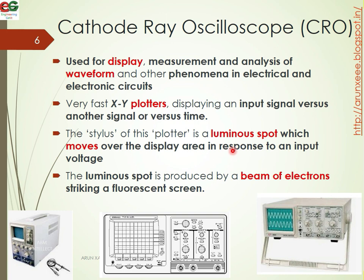The luminous spot is produced by a beam of electrons striking a fluorescent screen. If we use a phosphorous screen, the electrons will produce light on it.